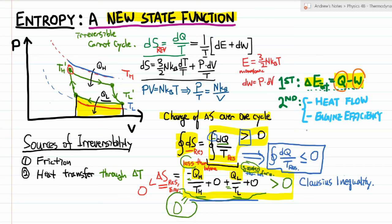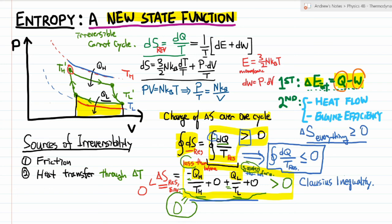This gives us a third statement of the second law of thermodynamics: the entropy of everything — the heat engine and the environment — always increases or stays the same. The change in entropy of everything is always greater than or equal to zero for all processes. In the Clausius inequality, you should connect this term with minus the change of entropy of the reservoir. So this concludes our introduction of entropy, and we got a new statement of the second law of thermodynamics out of it.